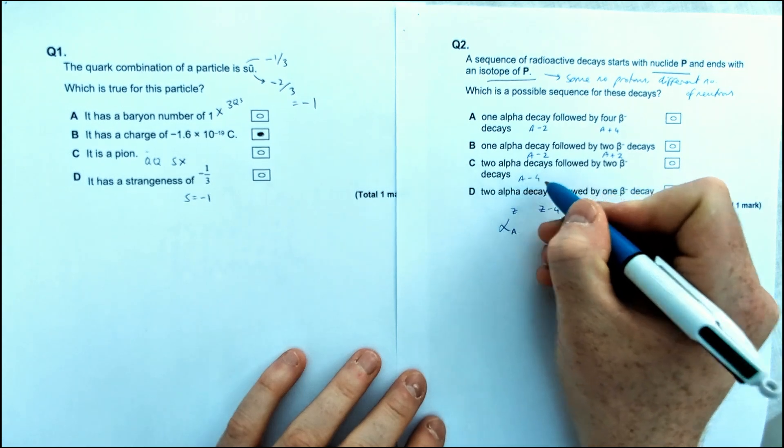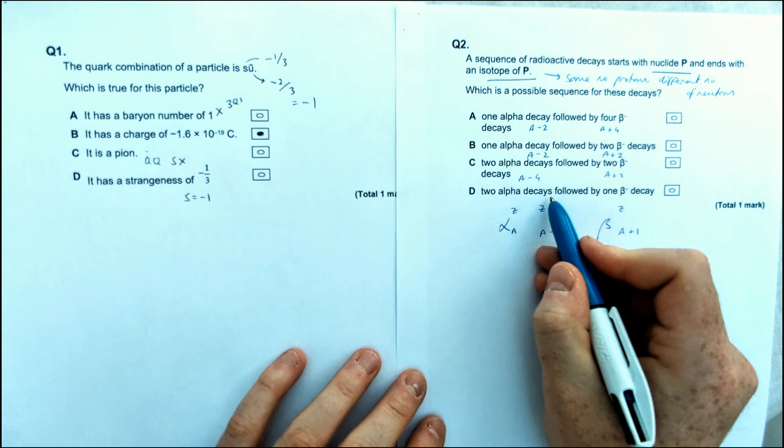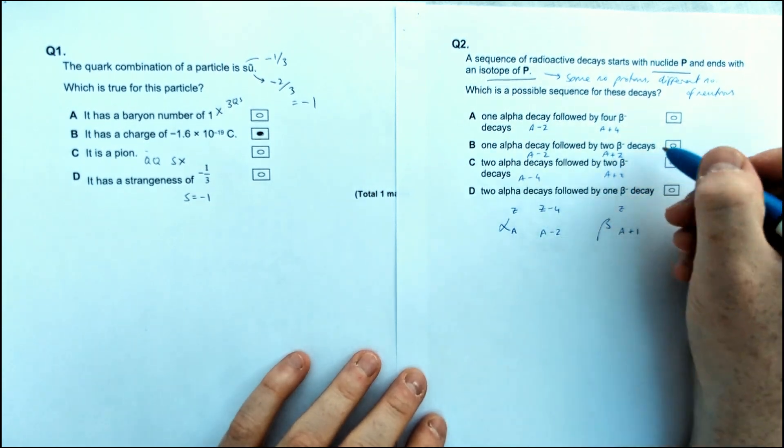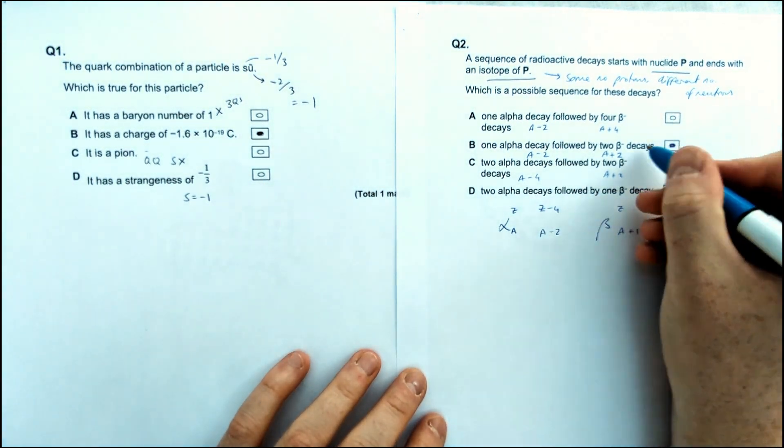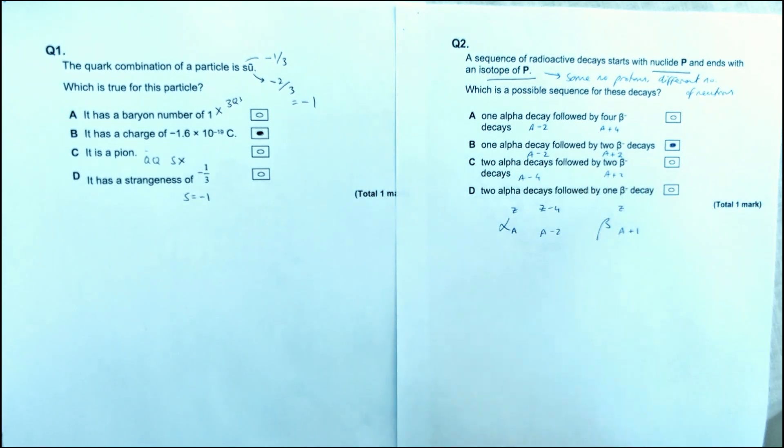2 alpha decays, so that'll be A minus 4, followed by 2 beta plus decays. Nope, that's not going to be equal. 2 alpha followed by 1 beta, not even close. So it's definitely going to be option B because they have the same atomic number or same proton number after as we did at the start.